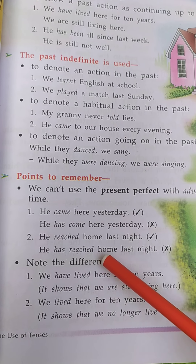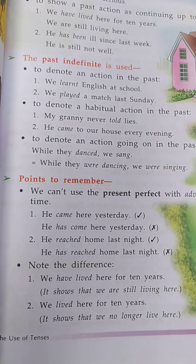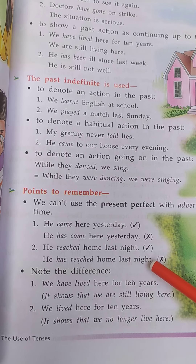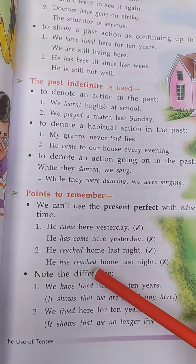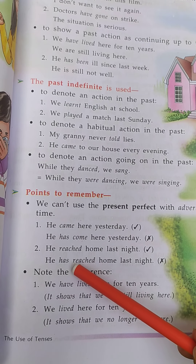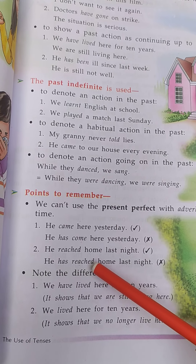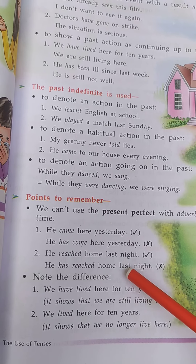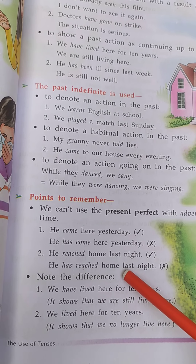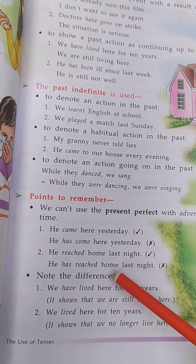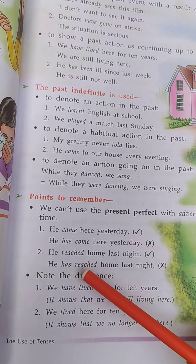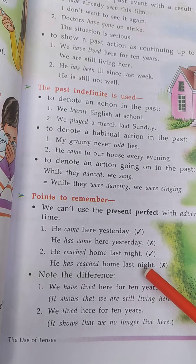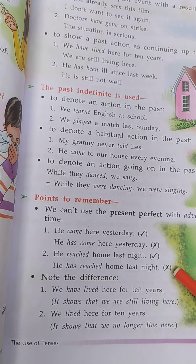Next: he has reached home last night. यह sentence wrong है। इस sentence में has reached — has plus V3, reached — यूज़ किया गया है, जो कि present perfect tense है। Present perfect tense के साथ जो adverb यूज़ हुआ है वो है last night, जो past time को show करता है। इसलिए इस sentence गलत है, क्योंकि present perfect के साथ कभी ऐसे adverb नहीं यूज़ होता है जो adverb past time को show करते हैं।